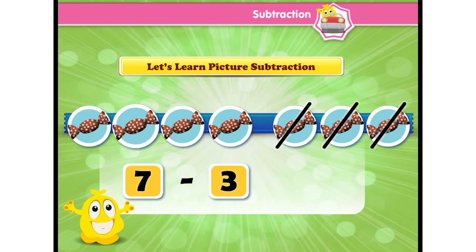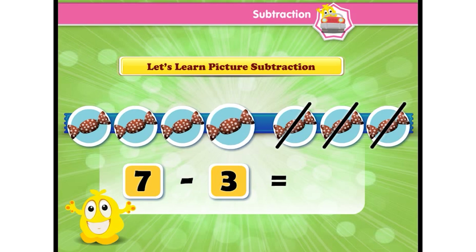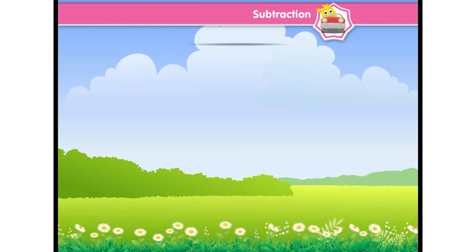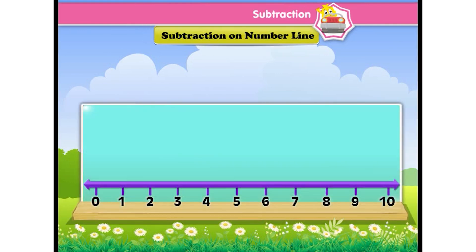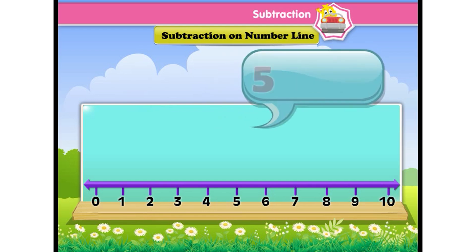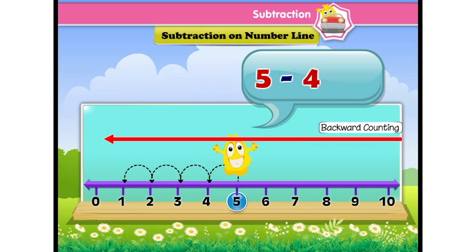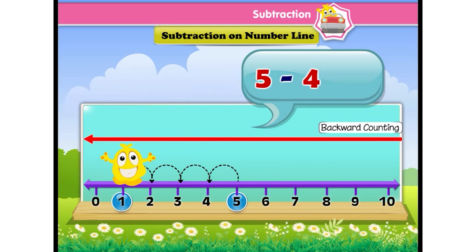1, 2, 3, 4. Now, subtraction on a number line. If we have to subtract 4 out of 5 using a number line, then first jump on 5. 4, 3, 2, 1. Yes, the answer is 1. So, 5 minus 4 is 1.